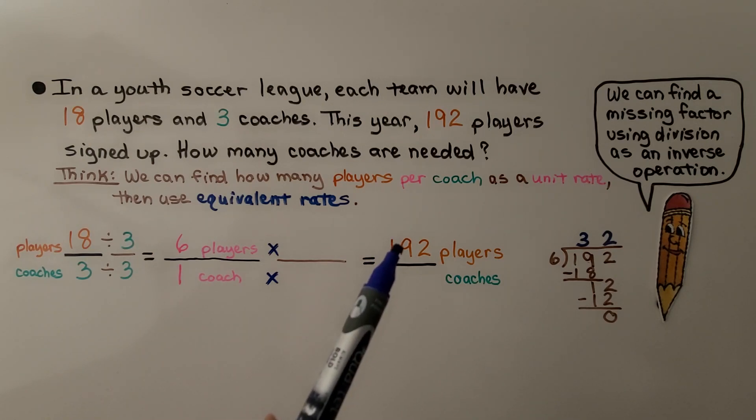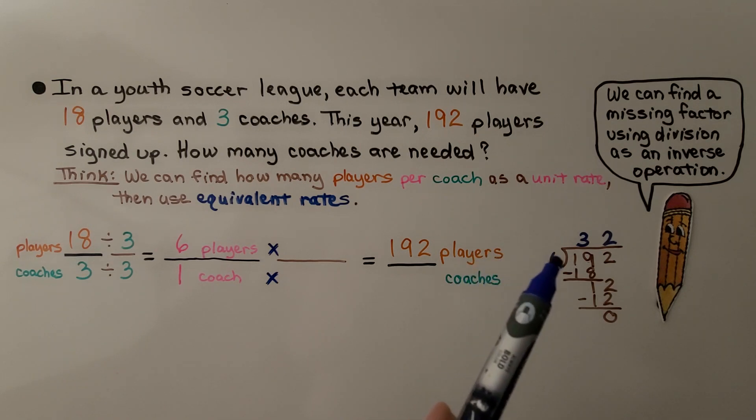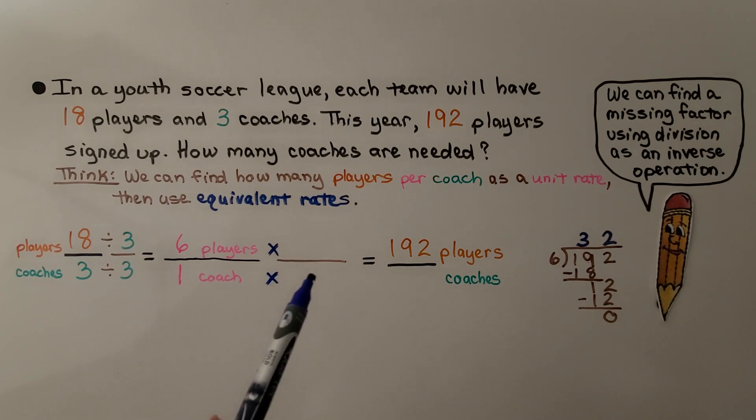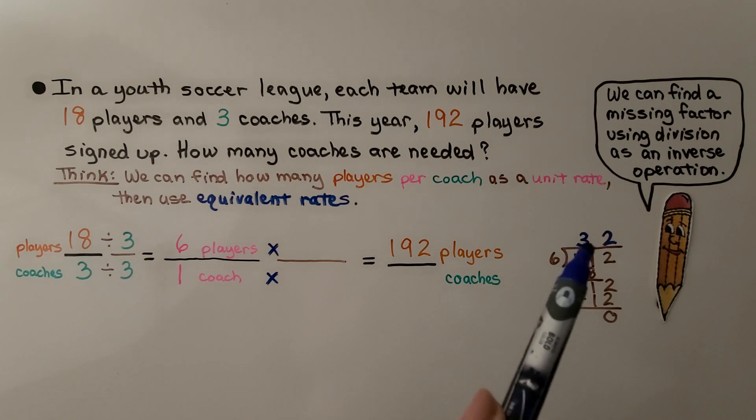If there's 192 players, we're going to divide 192 by six. How many sixes fit into 192? Remember, we can find a missing factor using division as an inverse operation. They undo each other. So if we need to find six times something equals 192, we can do 192 divided by six. And we see it's 32.